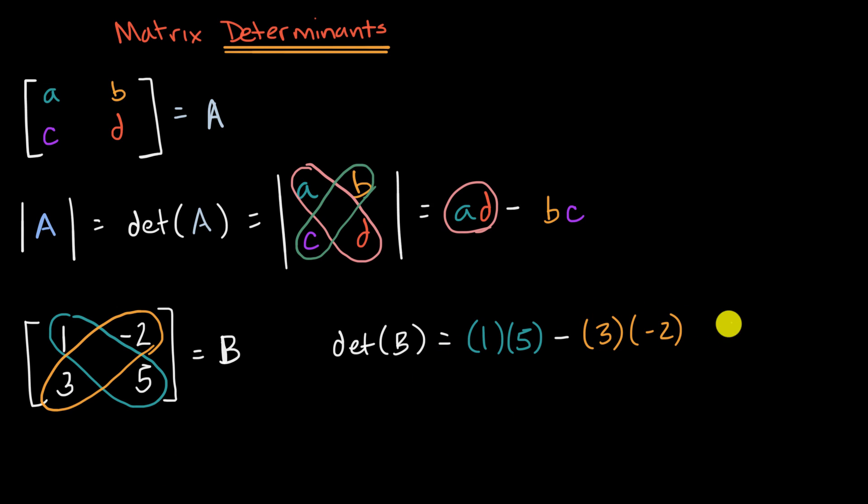And that of course is going to be equal to, one times five is five, three times negative two is negative six, but we're subtracting a negative six. Five minus negative six is the same thing as five plus six, which is going to be equal to 11.